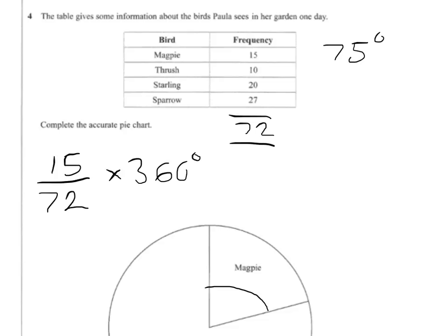For thrush, you just do these calculations, and you'll get 50. Then you'll get 100 for starling, and 135 for sparrow.